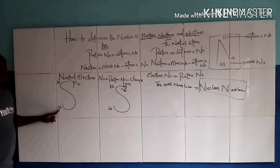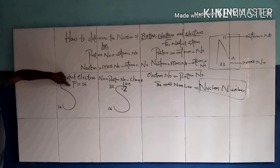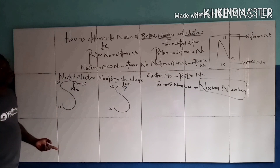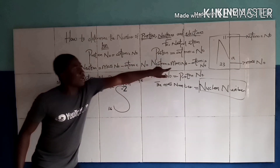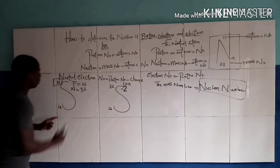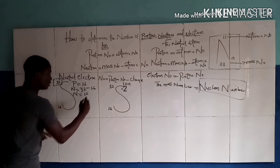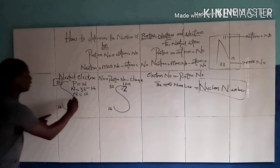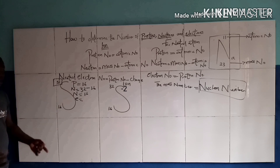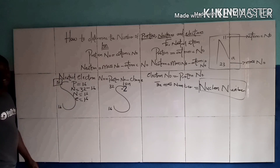The proton number is the atomic number of sulfur, which is 16. The neutron number for the neutral atom is the mass number minus the atomic number: 32 minus 16 equals 16 neutrons. Since this atom has no charge, the electron number equals the proton number, so the electron number is also 16.